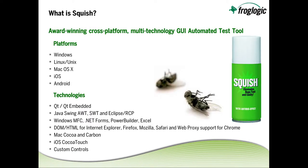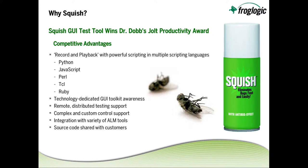Squish is an award-winning cross-platform multi-technology GUI automated testing tool, supporting a number of different platforms as well as an extensive list of technologies. The winner of the Dr. Dobbs Jolt Productivity Award, Squish offers competitive advantages including record and playback in powerful scripting languages, technology-dedicated GUI toolkit awareness, remote test distribution, support for complex and custom controls, integration with a variety of ALM tools, and FrogLogic shares its source code with customers.